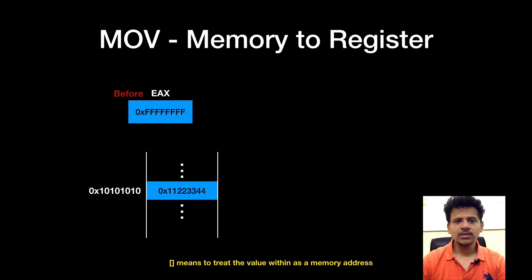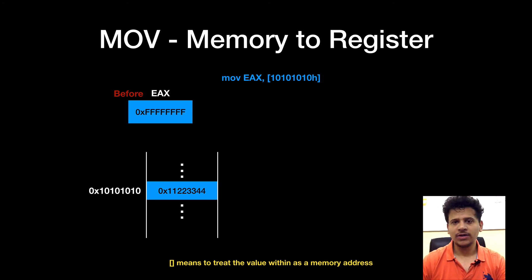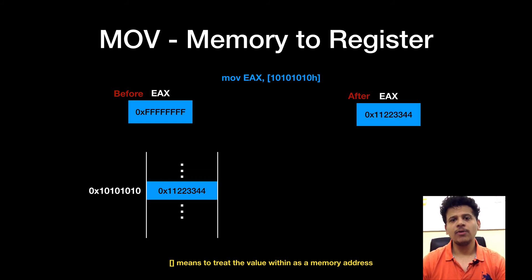Next, we will see MOV memory to register. In this, the value from memory address 10101010 will be copied to a register. Once again, square brackets mean to treat the value as a memory address. So the value from the memory address will be copied to the EAX register.